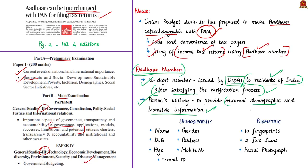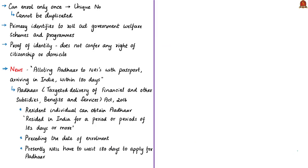The person willing to enroll for an Aadhaar number has to provide minimal demographic and biometric information during the enrollment process, which is totally free of cost. Demographic information includes details such as name, date of birth or age, gender, address, mobile number, and email ID. Biometric information constitutes fingerprints of the 10 fingers, two iris scans, and a facial photograph. An individual needs to enroll for Aadhaar only once, as it is a unique number — no two persons will have the same biometrics, making it robust enough to eliminate duplicates and fake identities.